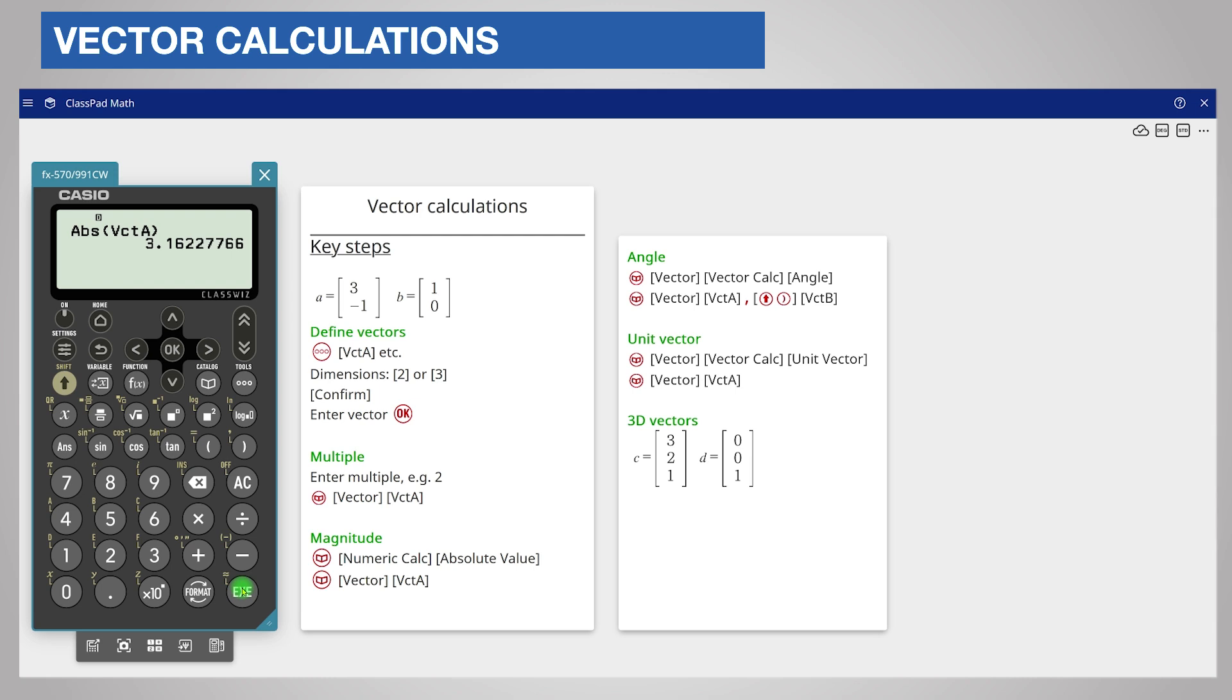The calculator displays the answer in decimal form. Unfortunately surd form is not available directly. However if you square the answer we can see that the magnitude is the square root of 10.